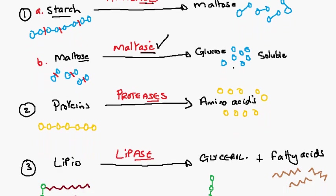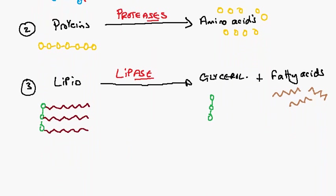The second type of digestion to consider is the breakdown of proteins. Again, a chain molecule which is broken down by a group of enzymes known as proteases to their monomers known as amino acids. The amino acids are then absorbed into the bloodstream and then assimilated into our cells.